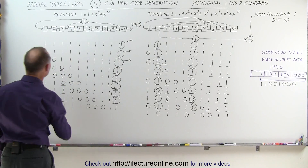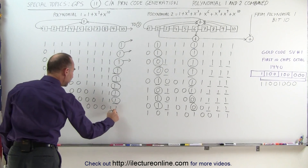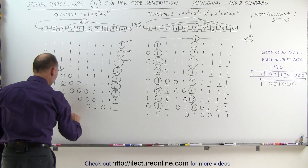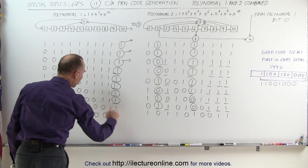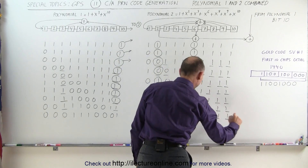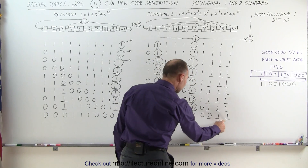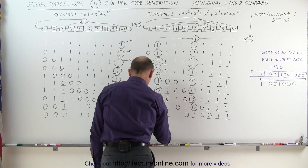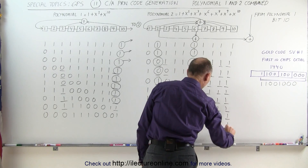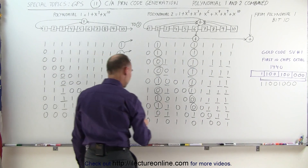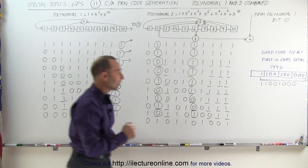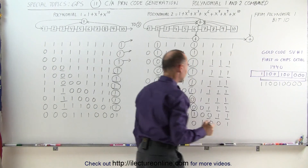A couple more. We grab the 3rd and the 10th — that's 2, even, becomes 0, goes in the front, everything else shifts over. Over here we grab the 2nd, 3rd, 6th, 8th, 9th, and 10th — 1, 2, 3, 4 — that's even, becomes 0, everything else shifts over. Here we grab the 10th bit position, the 2nd over here, and the 6th over there: 1 plus 0 plus 1 is 2, even, that becomes a 0.